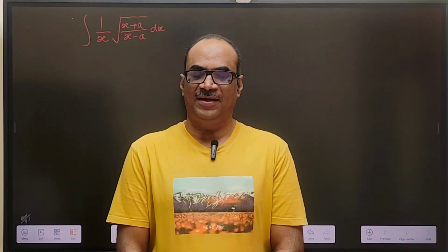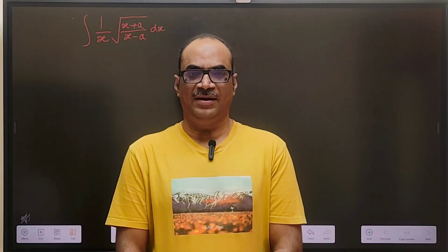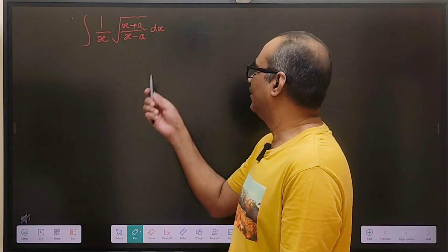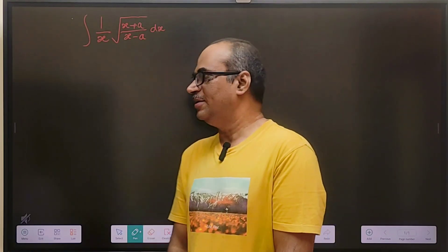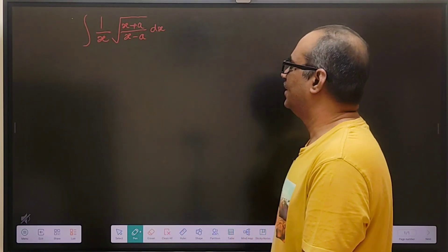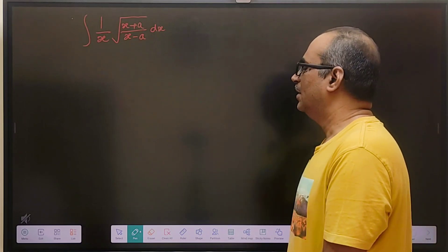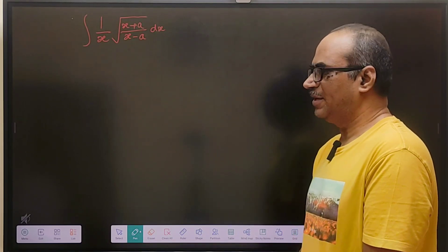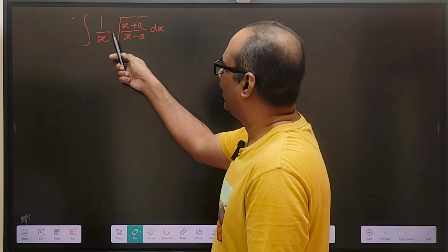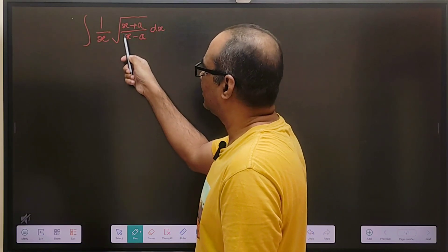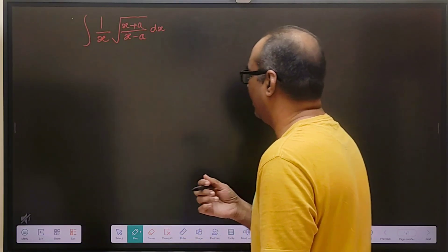Hello friends. As part of CBSC 12th board exams, this particular question came and some of the students felt it was a little bit tough. We have to find out the integral of 1 by x, square root of (x plus a) by (x minus a).